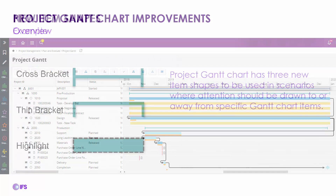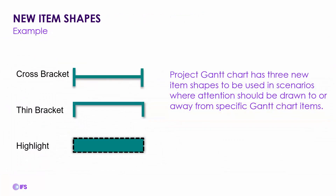A couple of new item shapes have been introduced. The first is a cross bracket, then a thin bracket, and then a highlight line. These are functionalities visible on screen that help draw attention to very specific items on the Gantt chart, depending on how you set them up.